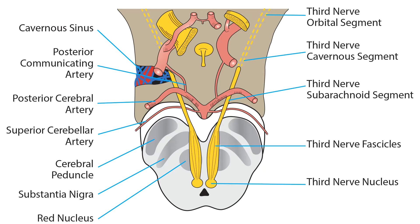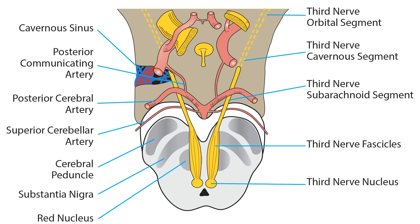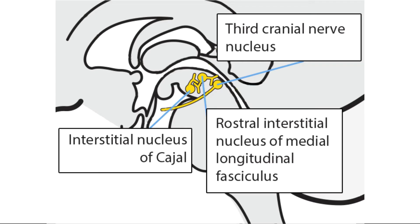Lesions along the course of the nerve impair any or all of its components. The third nerve nucleus is situated near the midline of the midbrain tegmentum, immediately ventral to the aqueduct of Sylvius. Nearby are important structures: the interstitial nucleus of Cajal (INC) and the rostral interstitial nucleus of the medial longitudinal fasciculus (RIMLF). The RIMLF initiates vertical gaze, while the INC maintains the eyes in vertically eccentric gaze against elastic orbital forces.